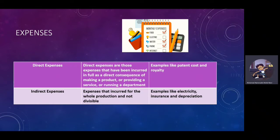For Expenses: Direct Expenses are those expenses that have been incurred in full as a direct consequence of making a product, providing a service, or running a department. For example, like patent costs and royalties. For Indirect Expenses, they apply to the overall production and are not divisible. Examples include electricity, insurance, and depreciation.